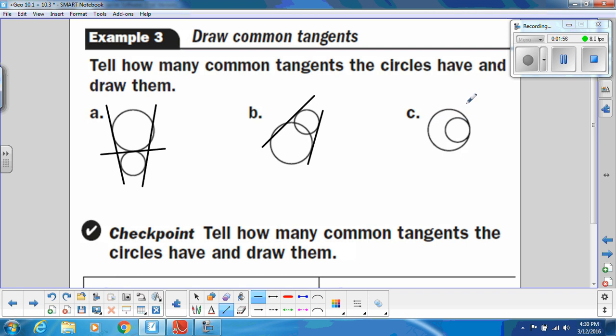And this one, again, there's only an external tangent, and that's really the only one I can draw. I can't draw anything else out here because it wouldn't be a common tangent. Like, if I drew one out here, that's not a tangent to this inner circle. So, this one only has one common tangent.